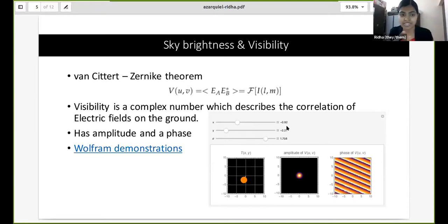You could play around with the Wolfram demonstration I have shown here. When the source is a little offset, you have an amplitude and a phase. If the source is more centered, like I showed in the first image, a simple source, the phase would be constant.